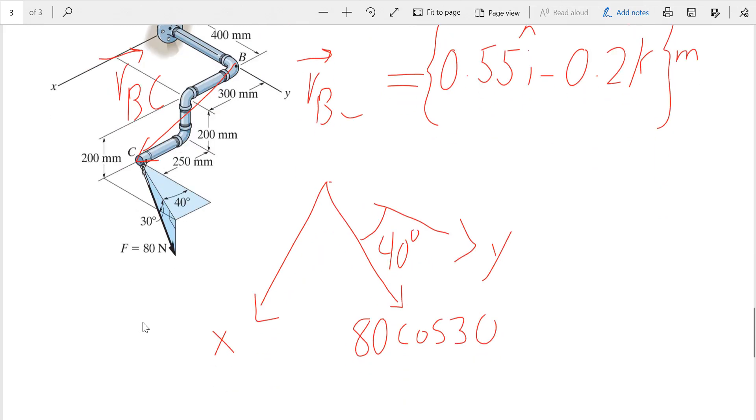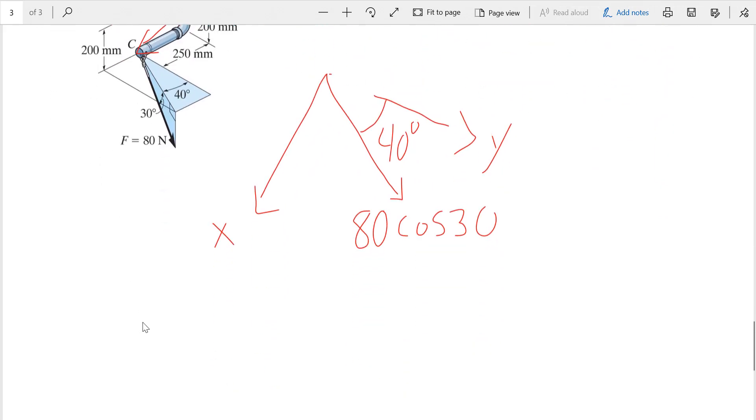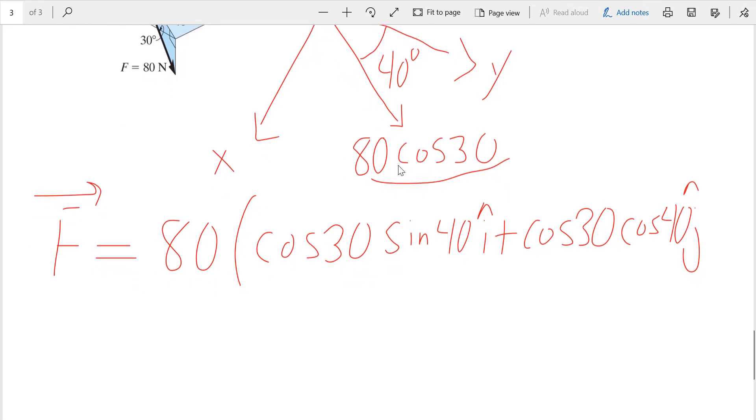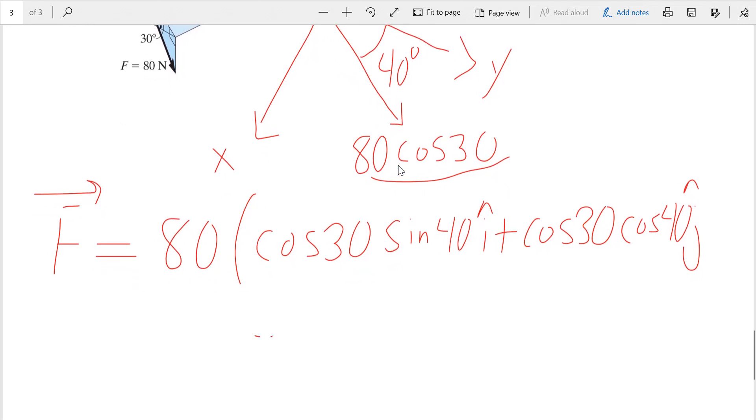If I want to write my force F, 80 is the magnitude, so I'm going to factor it. Cosine 30 sine 40 will give me the X component. Then cosine 30 - whenever we decompose it in X and Y - cosine 40 gives me the Y component, and for the Z component would be negative sine 30.